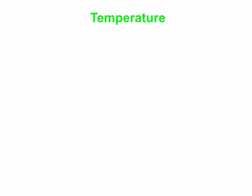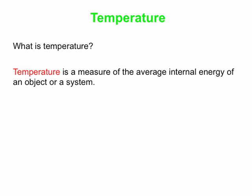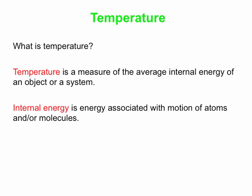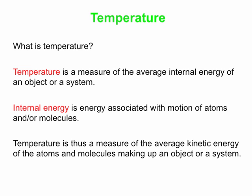Okay, so we'll start in on temperature, and the first thing we should talk about is, what is it? So what do you think temperature is? What's a good definition? We're going to define temperature as a measure of the average internal energy of an object or a system. Well, that means we now have to define internal energy. So internal energy is energy associated with the motion, in other words kinetic energy, of the atoms and or the molecules that make up the object or a system. So then we can reformulate our definition of temperature. Temperature is a measure of the average kinetic energy of the atoms and molecules making up an object or a system. And we will do more on this next time, that's for sure.